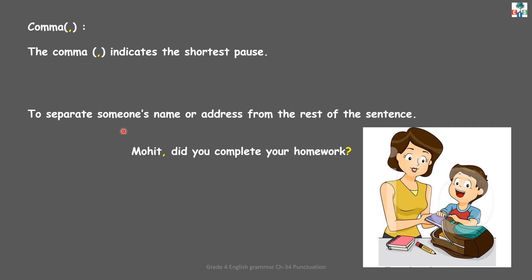A comma is used to separate someone's name or address from the rest of the sentence. For example: 'Mohit, did you complete your homework?' Here, after Mohit, I have used a comma and I took a pause while completing my statement. So after someone's name, we will use a comma and then complete our statement.